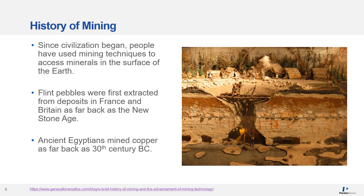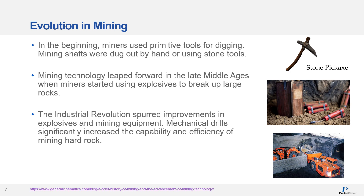Since civilization began, people have used mining techniques to access minerals in the Earth's surface. Flint was first extracted from deposits in France and Britain as far back as the New Stone Age, while ancient Egyptians mined copper as far back as the 30th century BC. In the beginning, miners used primitive tools for digging; mining shafts were either dug out by hand or using stone tools. Mining technology leaped forward in the late Middle Ages when miners started using explosives to break up large rocks. During the Industrial Revolution in the late 1800s, improvements in both explosive technology and mechanical drills significantly increased the capability and efficacy of mining.